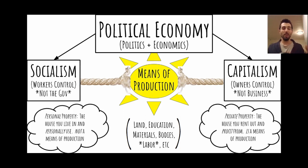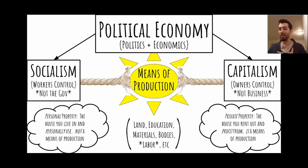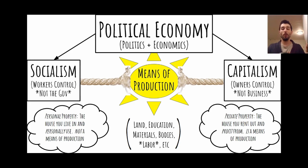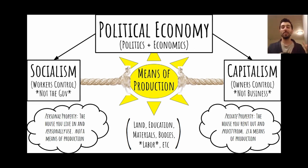The main means of production to emphasize is labor. Under capitalism, workers sell their ability to perform labor to owners, and owners rent out the other means of production so workers can perform labor and create profit for the owners. The house that you live in and personally use is your personal property — not a means of production. The house that you rent out and profit from but don't live in is a means of production and is your private property. One piece of property can be both one person's private property and another person's personal property.